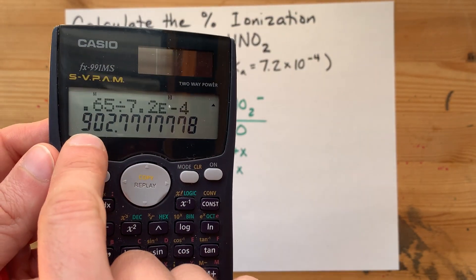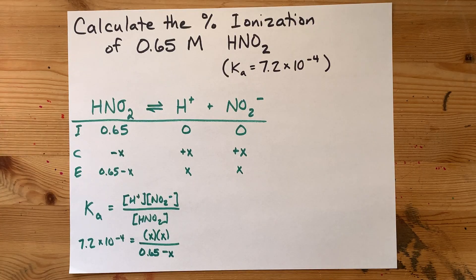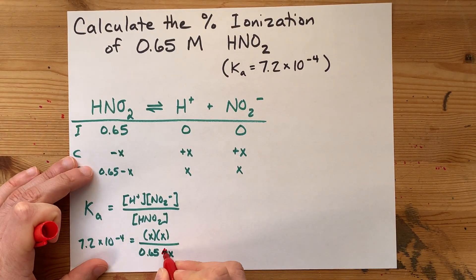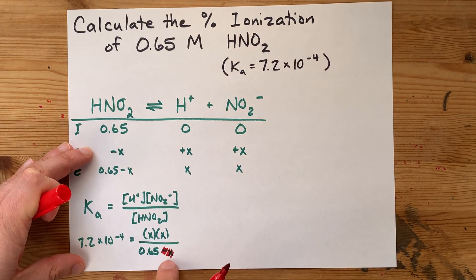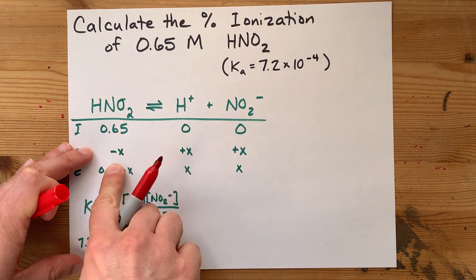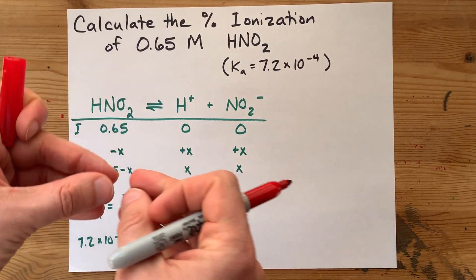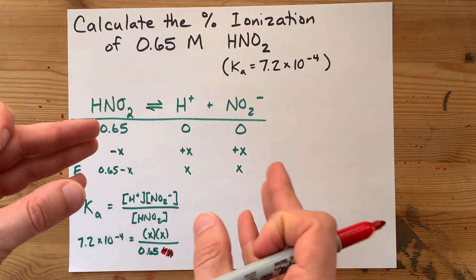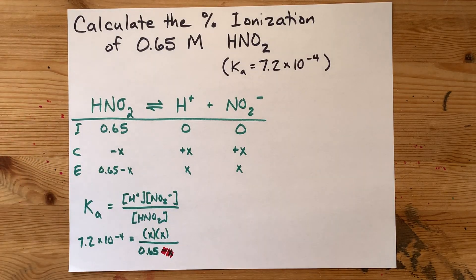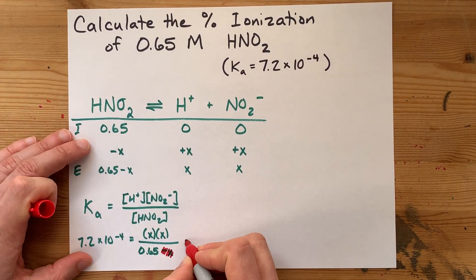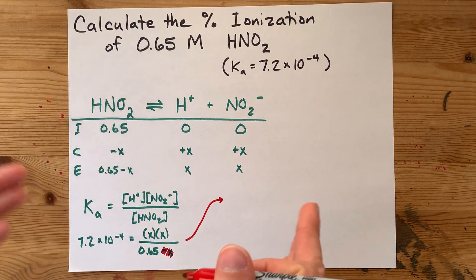...then you're allowed to cancel out the minus X. The idea being that if the Ka is small enough, then the amount of original acid that you lose by breaking up is so insignificant that the denominator is still about 0.65. It just ends up being a simplifying assumption.